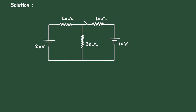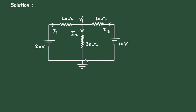Let's say this is node 1 with voltage V1 and this is the reference node or ground node. Let's say this is current I1 from the positive polarity of this voltage source to ground, this is current I2, and from this positive terminal to this ground, let's say this is current I3. We apply all the currents towards this reference node.